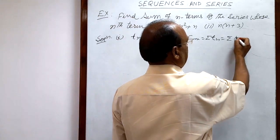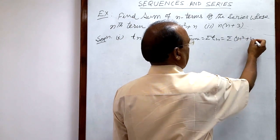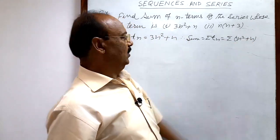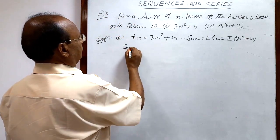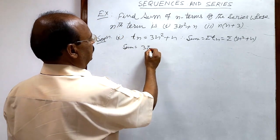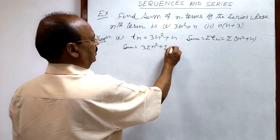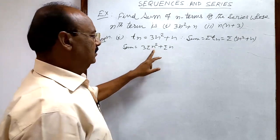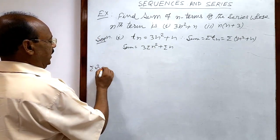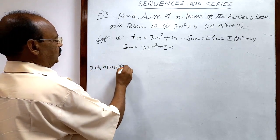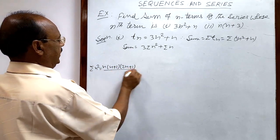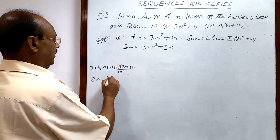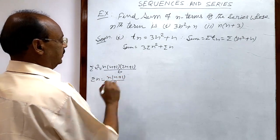This sigma will be distributed over both terms, so the sum becomes 3·sigma(n²) + sigma(n). We must remember the formula: sigma(n²) = n(n+1)(2n+1)/6, and the sum of the first n natural numbers is sigma(n) = n(n+1)/2.